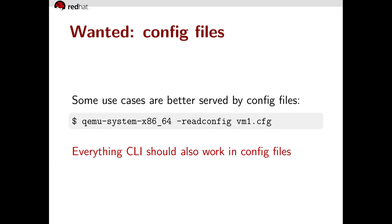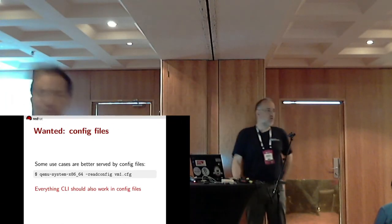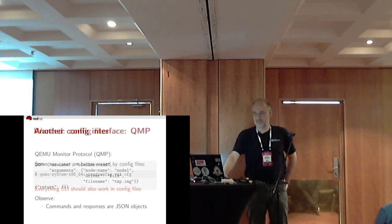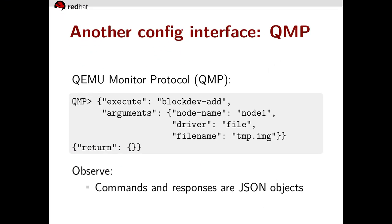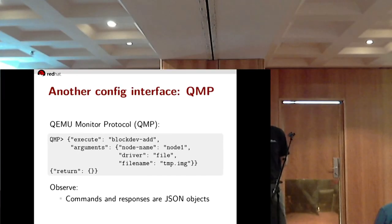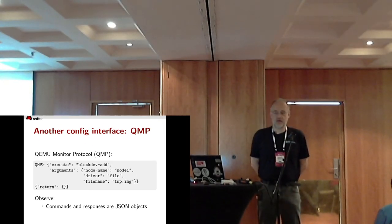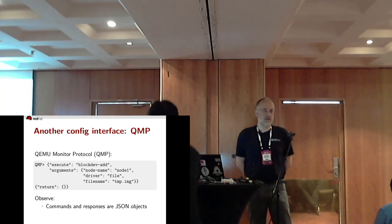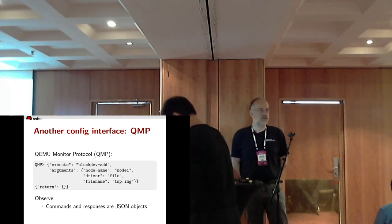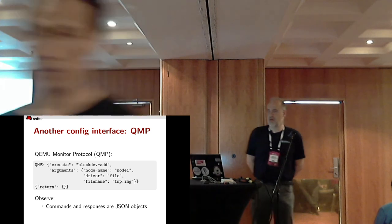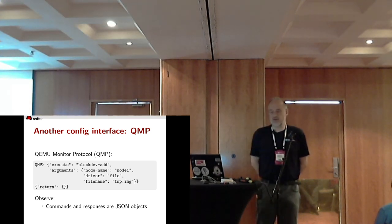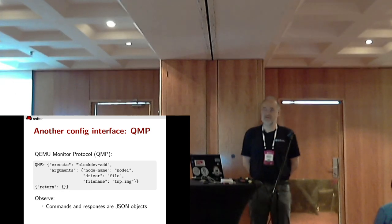That leads me to my first requirement: whatever I can do on the command line, I want to be able to do in a configuration file. There is another configuration interface — the monitor. In this talk I completely ignore the human monitor and use QMP and monitor interchangeably. To interact with the monitor you send a command and get back a response; both commands and responses are JSON objects.